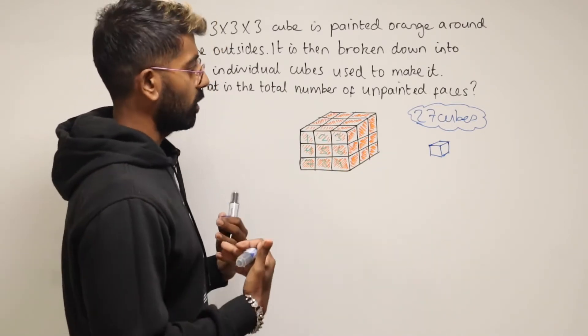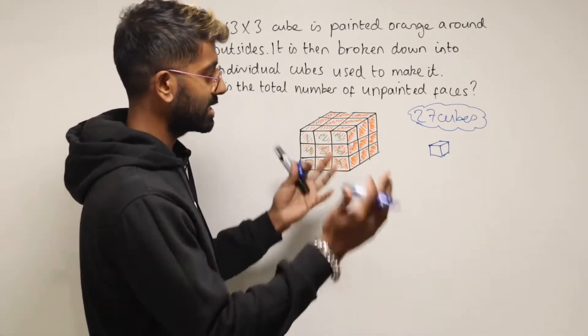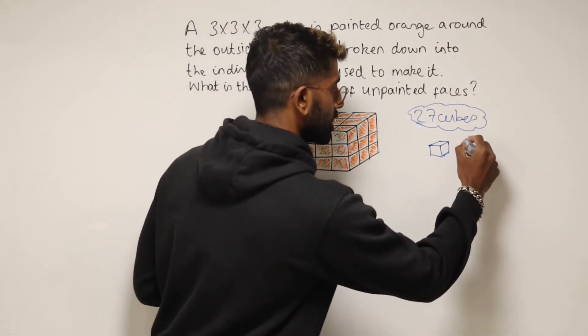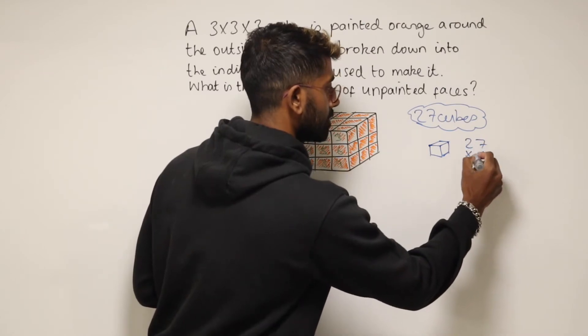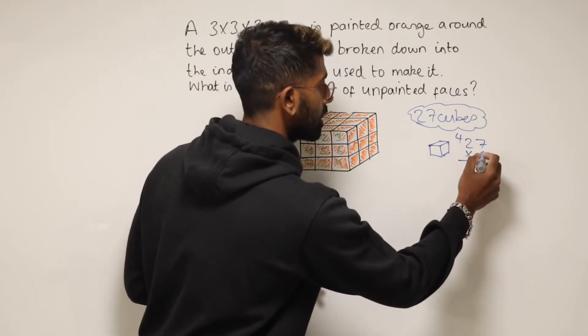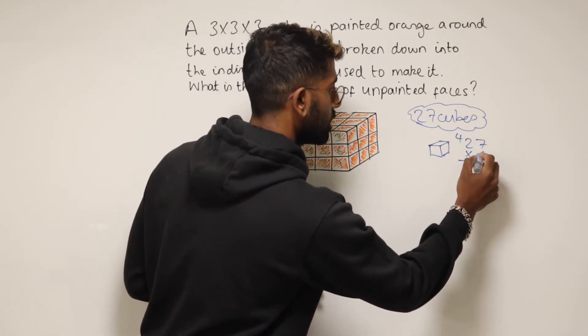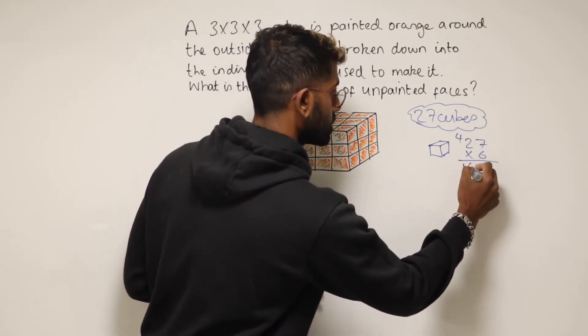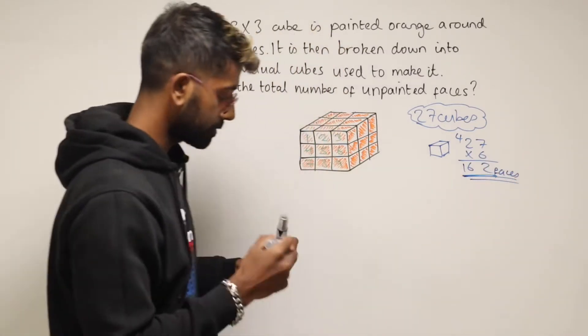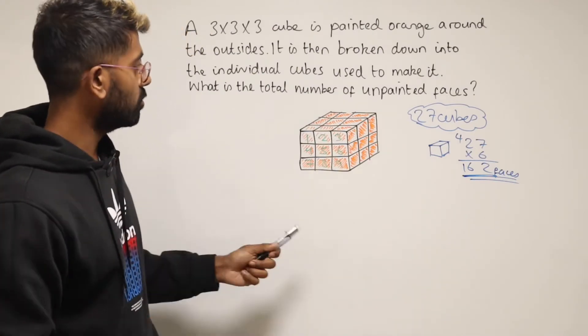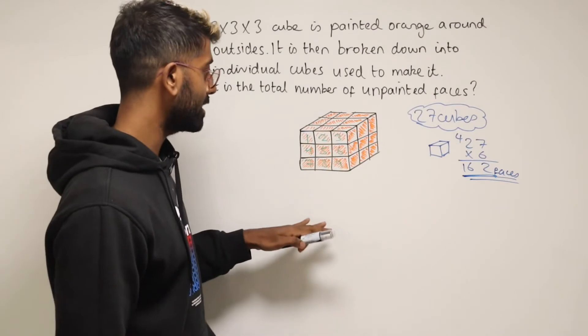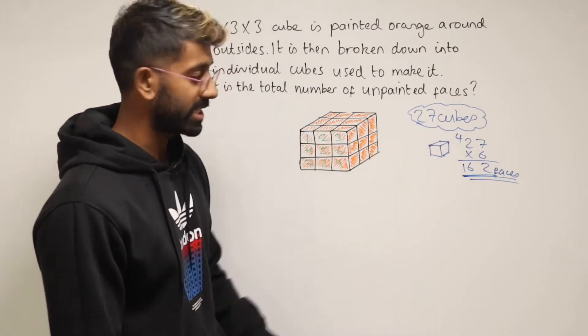What I want to work out then is how many faces all of the 27 cubes have altogether. So I could do 27 and times that by 6. Let's multiply that quickly. That comes out as 42 and then 12 plus 4 is 16. So 162 faces. In total, if I split this up into the 27 cubes that were used to make it, there will be 162 faces.